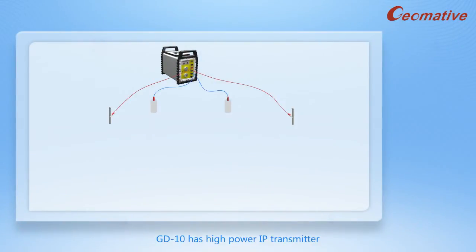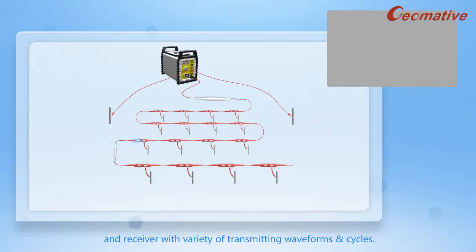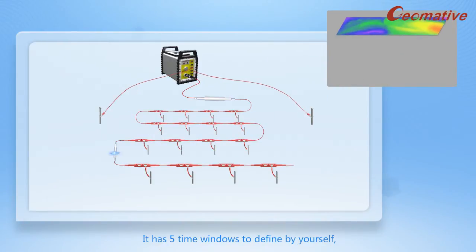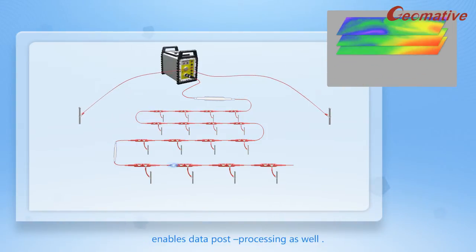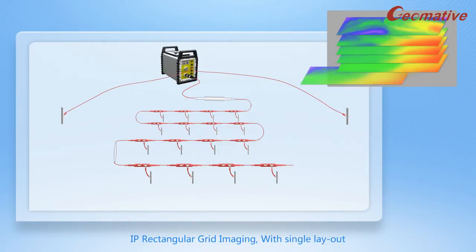GD-10 has a high-power IP transmitter and receiver with a variety of transmitting waveforms and cycles. It has five time windows to define yourself and enables data post-processing. Using our ERI components, you can perform high-power IP rectangular grid imaging with single layout.